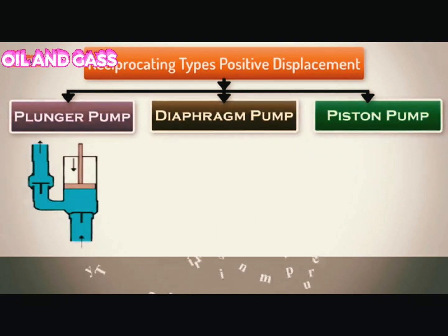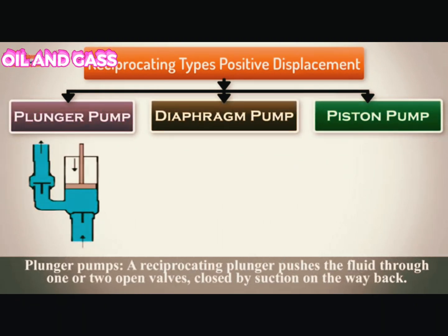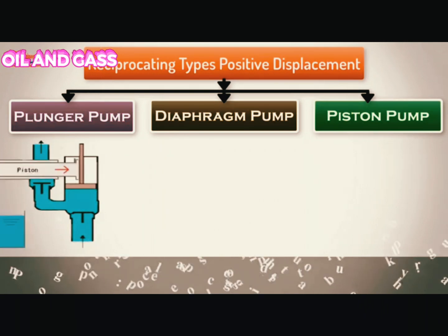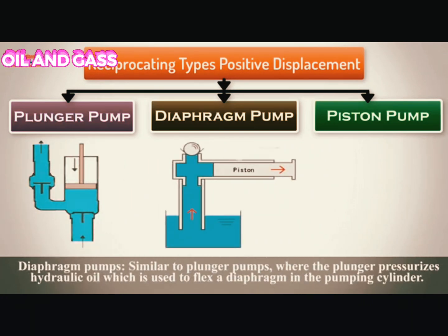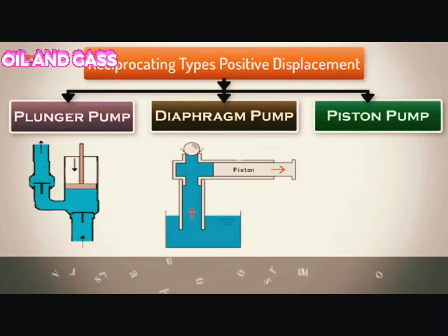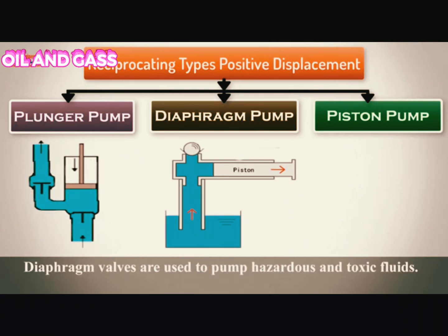Typical reciprocating pumps include plunger pumps, where a reciprocating plunger pushes fluid through one or two open valves, closed by suction on the way back. Diaphragm pumps are similar to plunger pumps, where the plunger pressurizes hydraulic oil which is used to flex a diaphragm in a pumping cylinder. Diaphragm pumps are used to pump hazardous and toxic fluids.